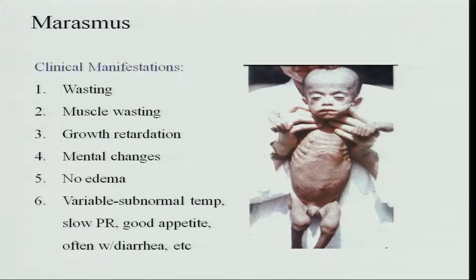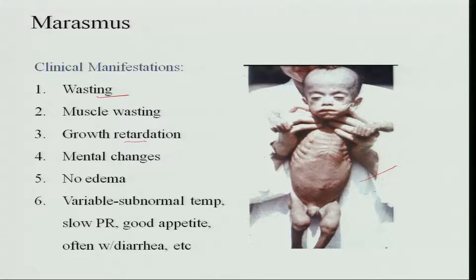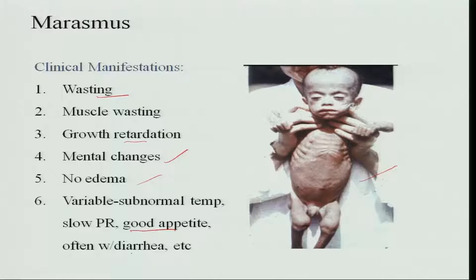The marasmic child shows a lot of wasting with no muscle at all, and there is growth retardation as weight reduces to 60 percent of normal. There are mental changes, no edema, and the temperature is subnormal because there is no subcutaneous fat or muscle in the body. There is no appetite and often diarrhea is present in the child.